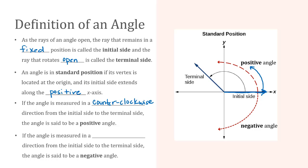If the angle is measured in a clockwise direction from the initial side to the terminal side, now the angle is said to be a negative angle. So the only difference between a positive and a negative angle is the way they rotate.